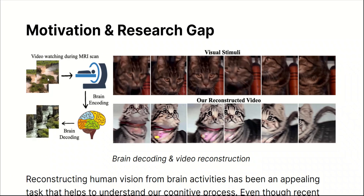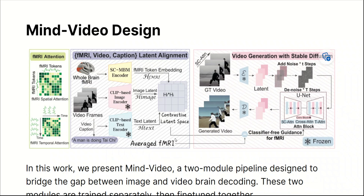The way it's done is: a person is shown a video, and while watching, their brain activity is recorded by an fMRI scan. Then they use a diffusion-based model to reconstruct the video frames from just the brain activity. You might think reconstructing video from brain activity is easier than images, but there is one major issue — the spatiotemporal information needed. Videos are a combination of frames, but each frame depends on the previous and subsequent frame, which is one of the main challenges.